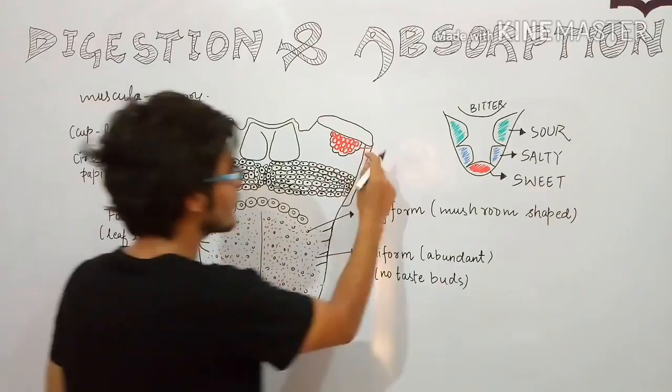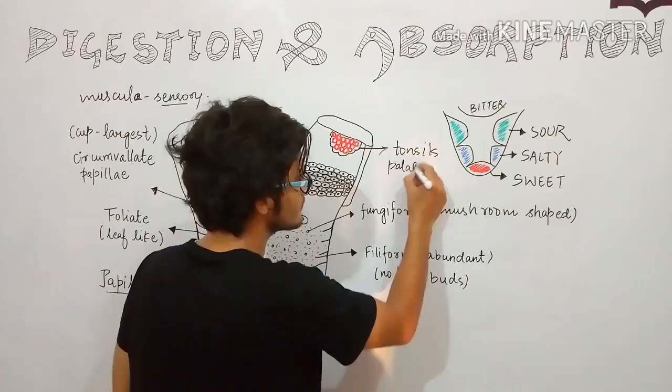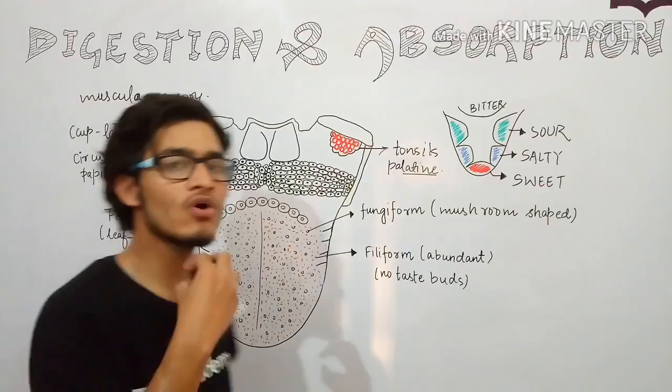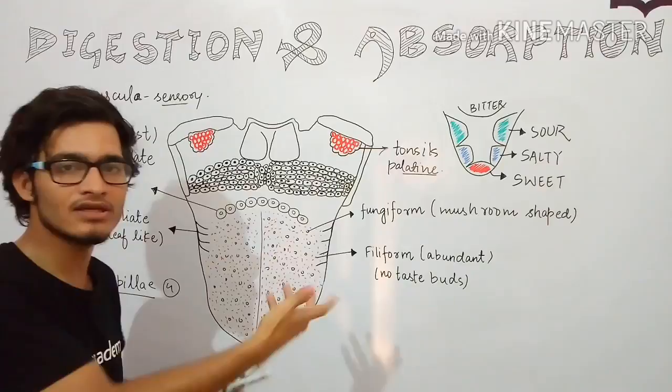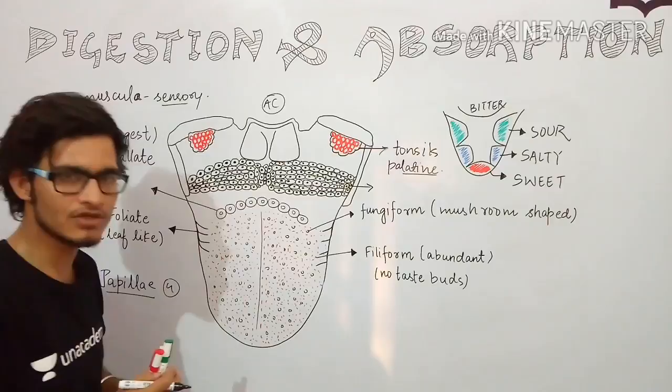The structures present above the tongue are tonsils — specifically, these are palatine tonsils. The tongue is attached to the floor of the oral cavity with the help of the frenulum, which we have discussed when we read about the alimentary canal. So the palatine tonsils are lymph nodes present in that region.